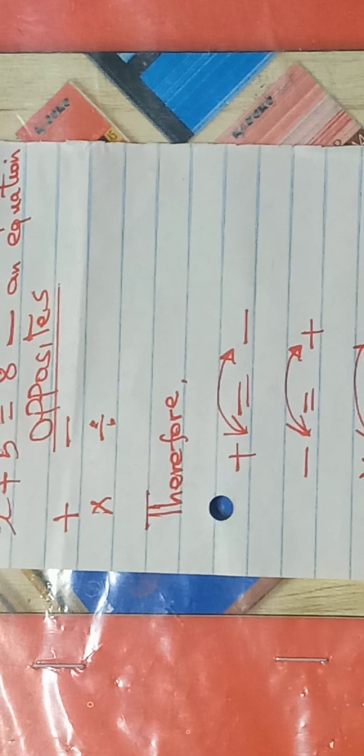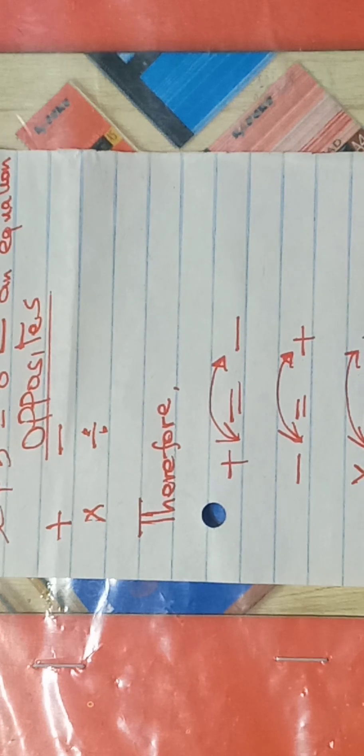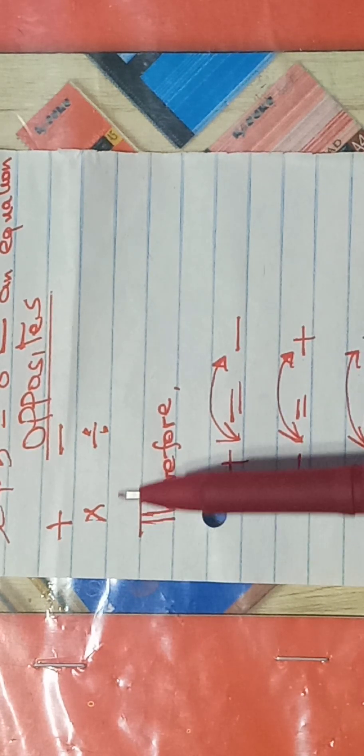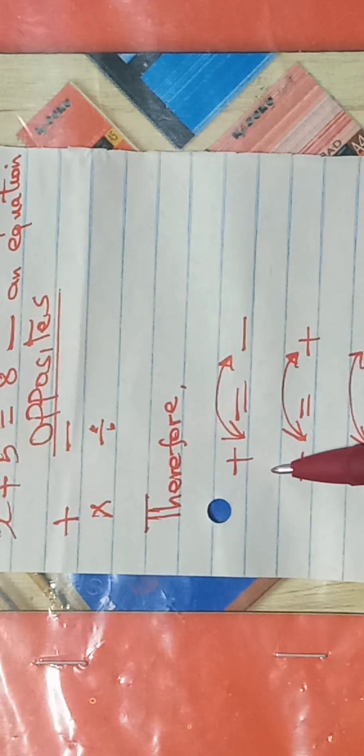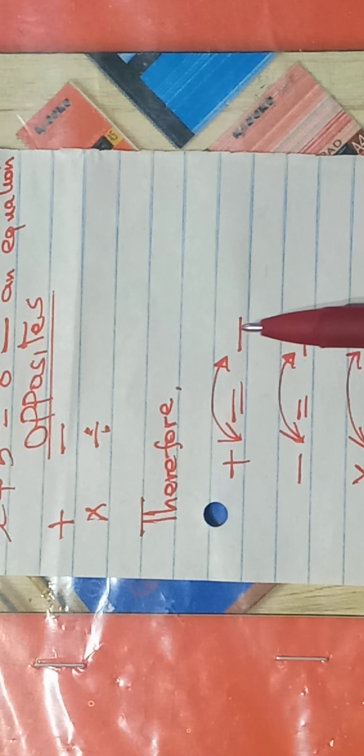So what I want my learners to note here is that signs change to their opposites when you move them across an equal sign. What do I mean? If you are moving a number with a positive sign, when it crosses the equal sign, it changes to be a minus.